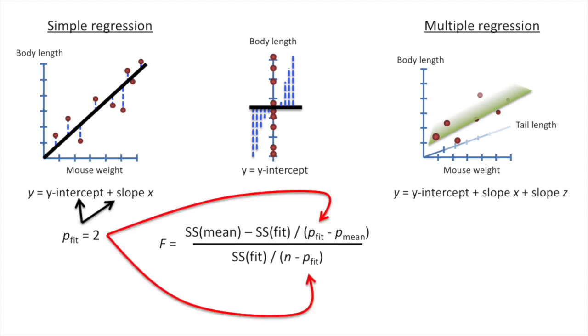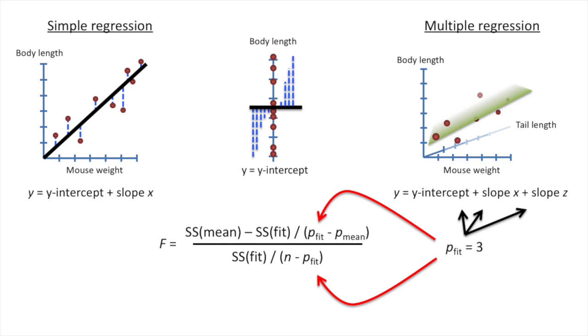For simple regression, p-fit equals 2, because we have two parameters in the equation that least squares has to estimate. And for this specific example, the multiple regression version of p-fit equals 3, because least squares had to estimate three different parameters. If we added additional data to the model, for example, the amount of time a mouse spends running on a wheel, then we have to change p-fit to equal the number of parameters in our new equation. And for both simple regression and multiple regression, p-mean equals 1, because we only have to estimate the mean value of the body length.